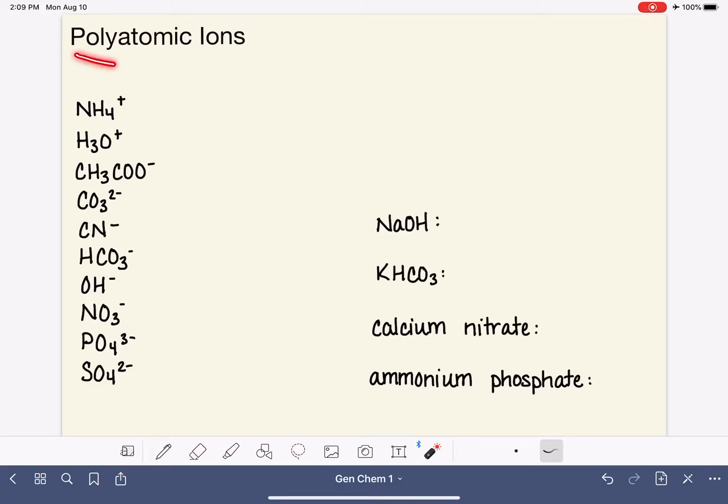Let's talk about polyatomic ions, and let's start by just breaking down this word, polyatomic, and what does it mean? Poly is a prefix that means many, so polyatomic literally translates to many atoms.